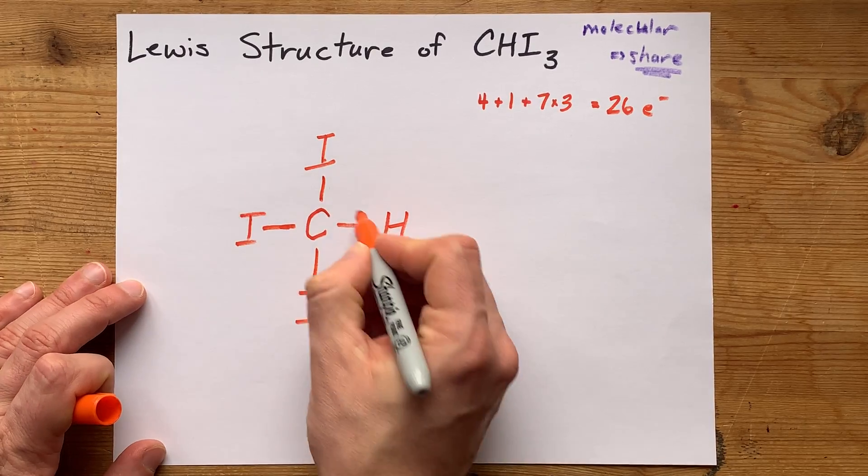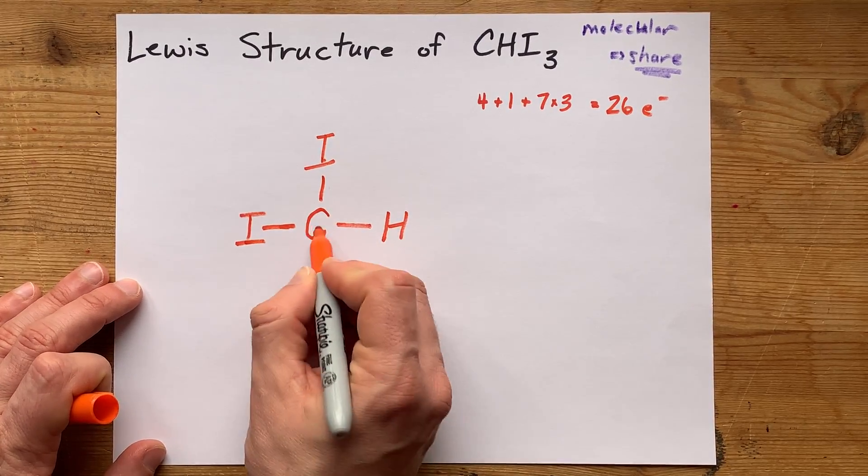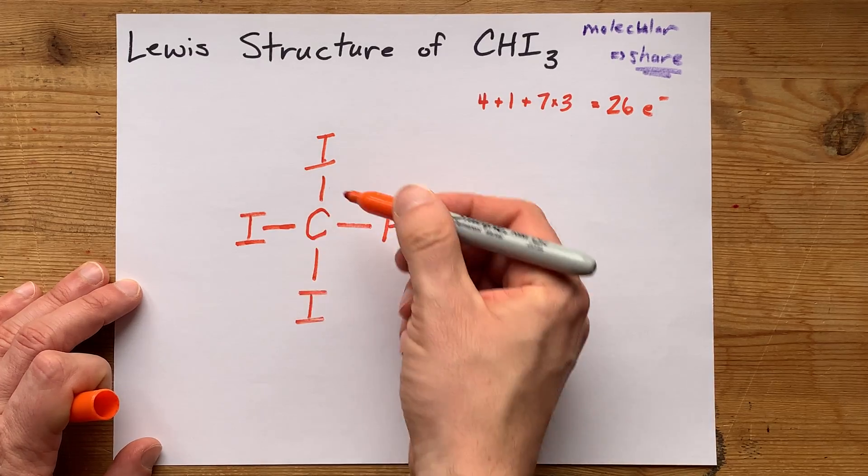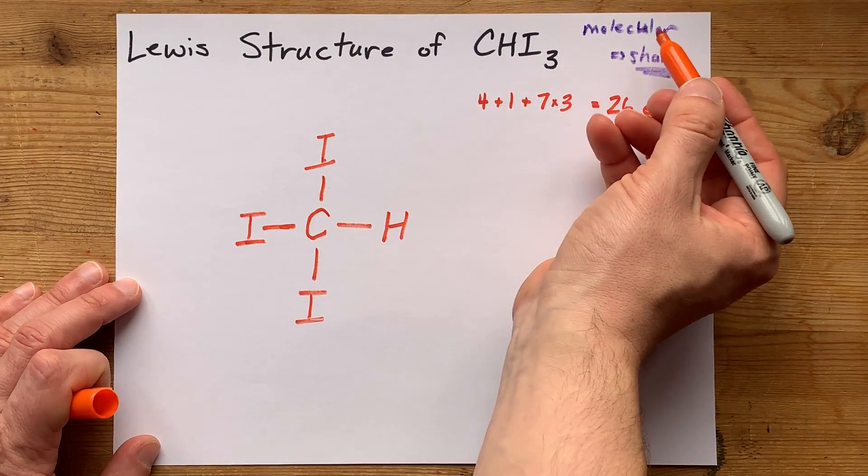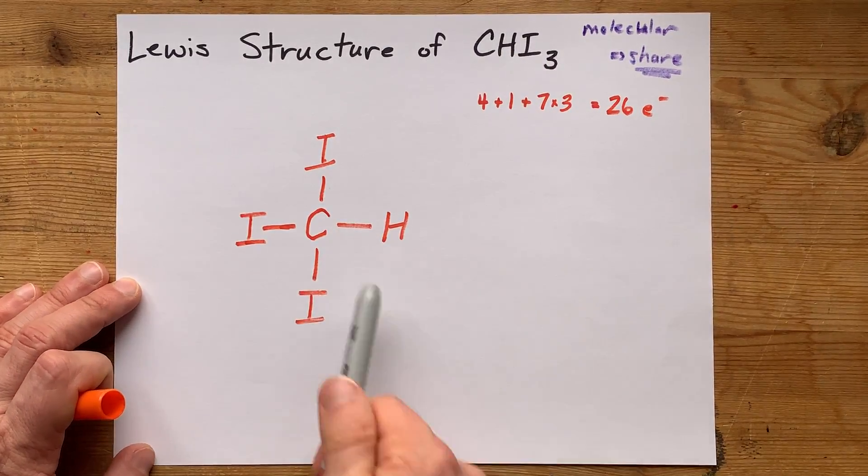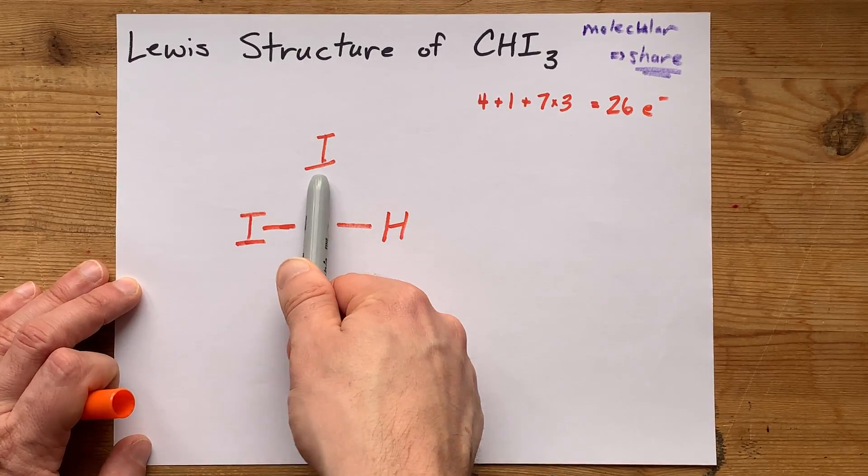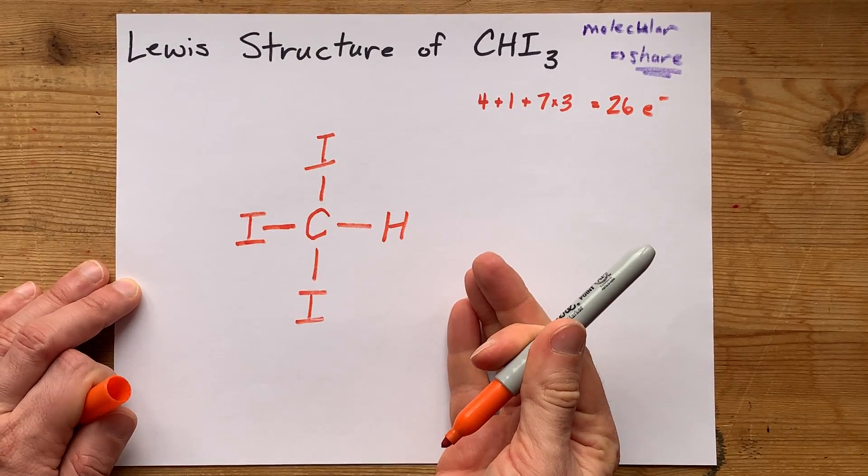Now, I'm putting single bonds between my central atom and my outer atoms, because if there weren't single bonds there, then it wouldn't be a molecule, right? 2, 4, 6, 8 electrons that I've already dealt with.